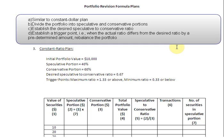In addition, we are going to establish a ratio which we are going to call the speculative-to-conservative ratio. We are going to have a desired speculative-to-conservative ratio from the beginning and then set our trigger point — that is, we are going to specify that when the actual ratio differs from the desired ratio by a predetermined amount, we need to rebalance the portfolio.